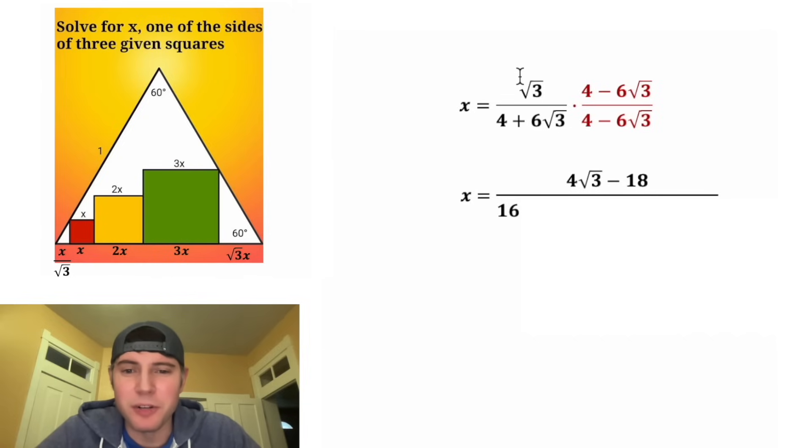4 times negative 6 root 3 is negative 24 root 3. 6 root 3 times 4 is positive 24 root 3. And positive 6 root 3 times negative 6 root 3 is equal to negative 36 times 3, which is 108. From here, these middle two terms will cancel each other out. And so we have 16 minus 108, which is equal to negative 92.